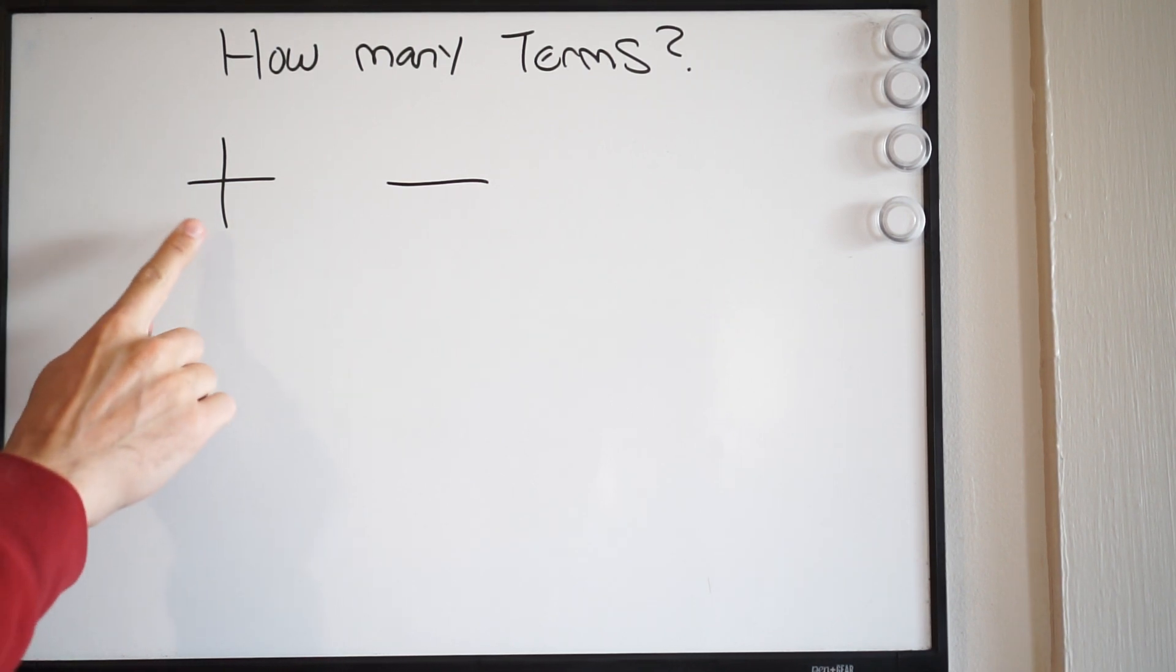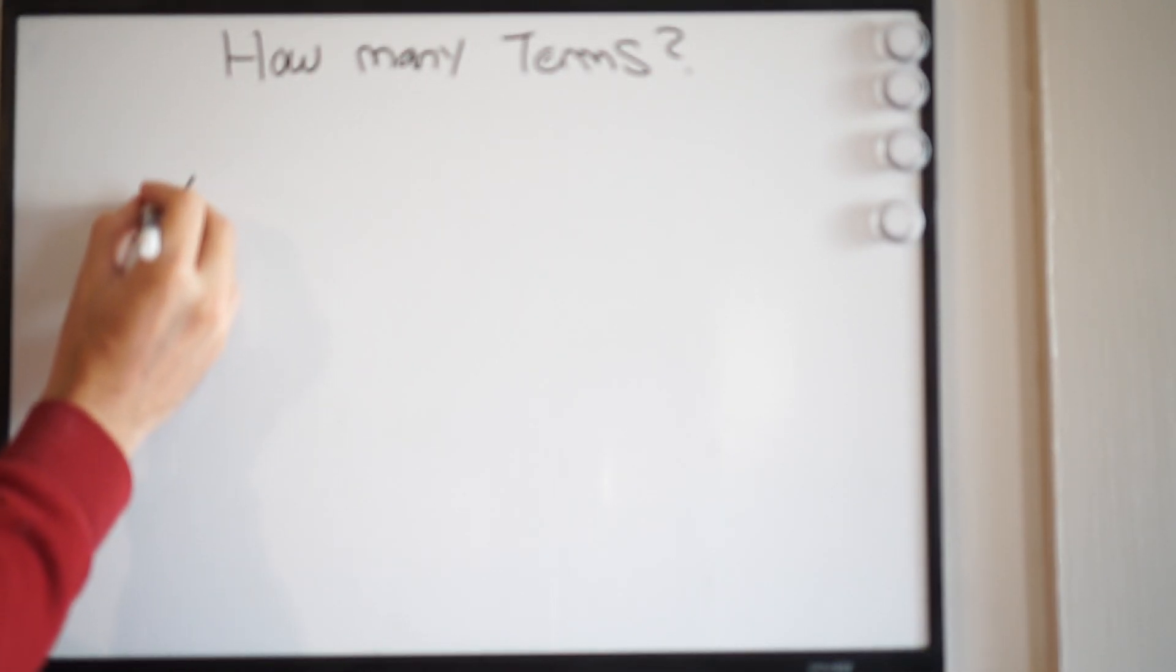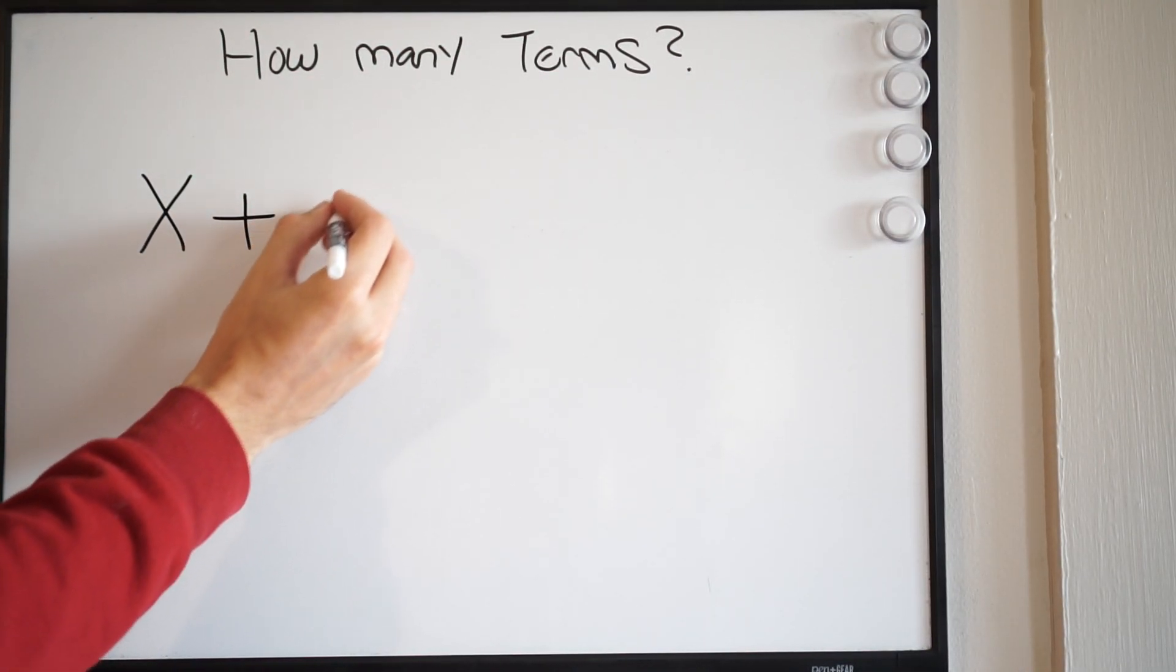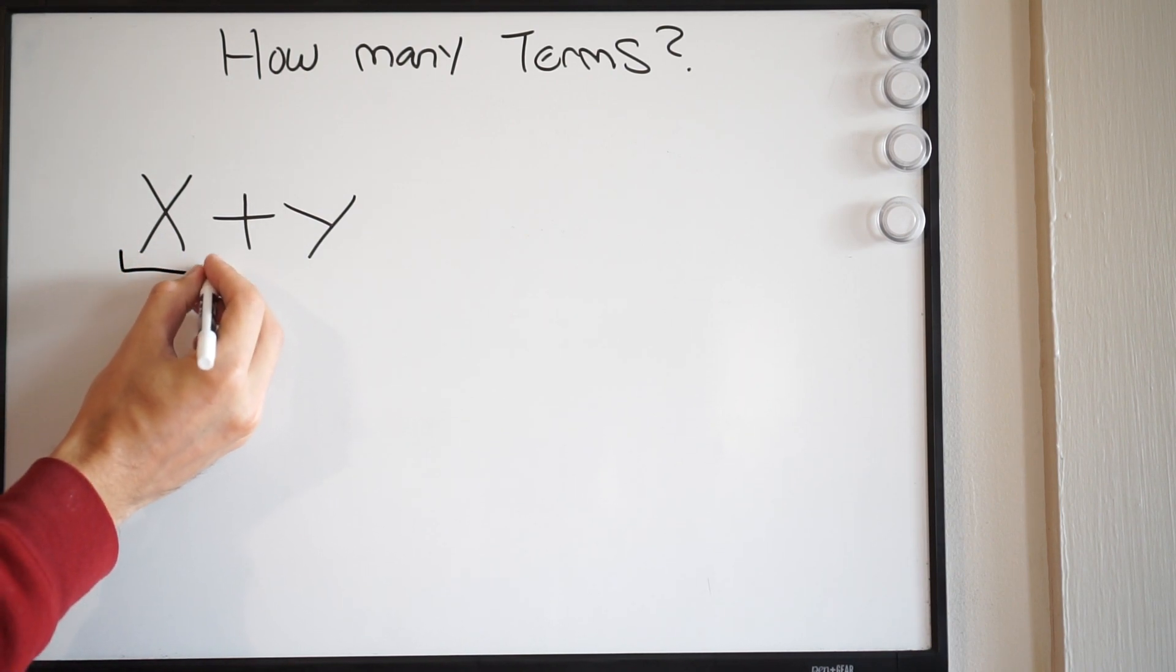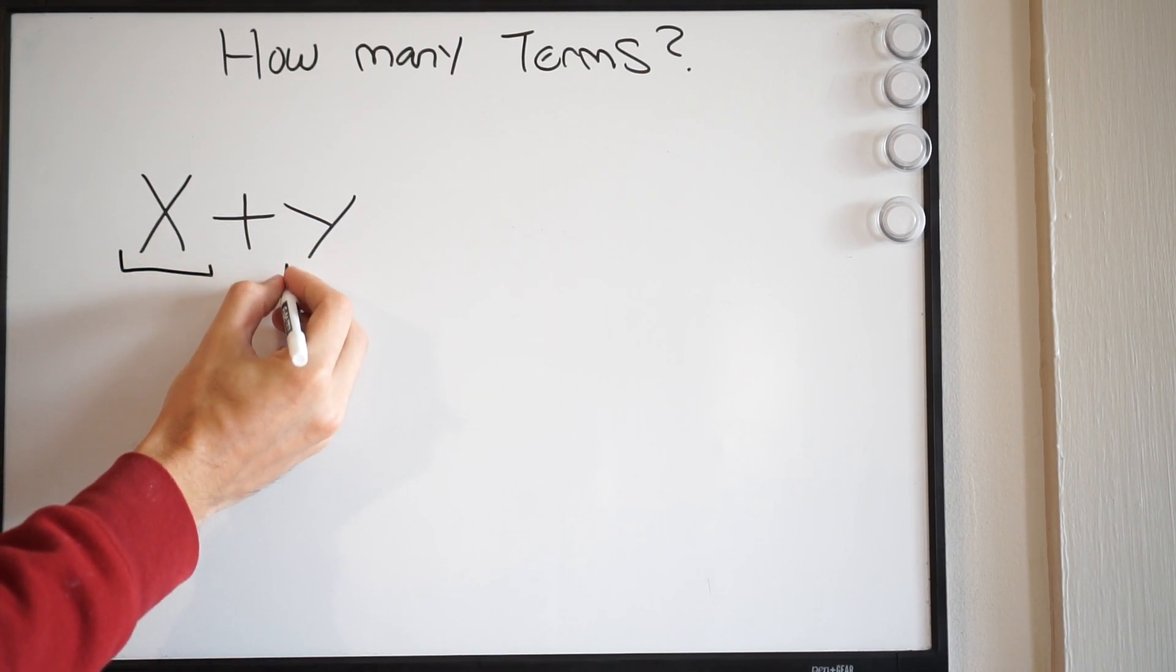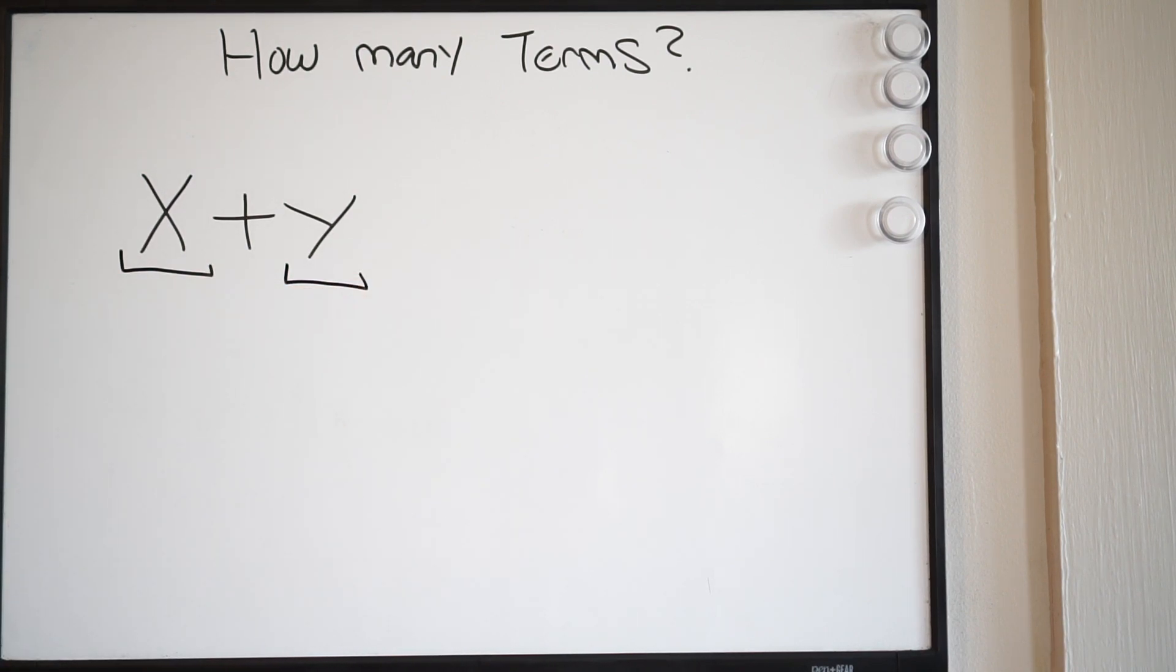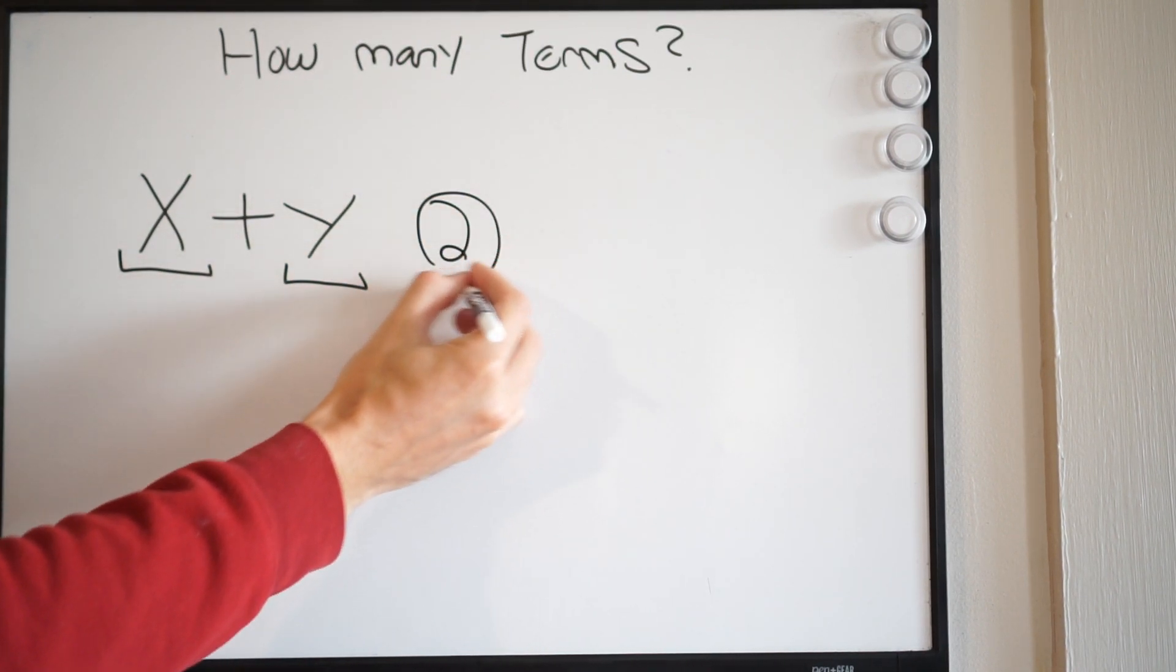So for example, let's do a problem. If we have x plus y, well how many terms do we have? Well the first thing, do we have addition or subtraction? And yes we do, we have addition. So this is acting like your separator. So I will have a term here, which is x, and I have a term here, which is y. So this is going to have two terms.